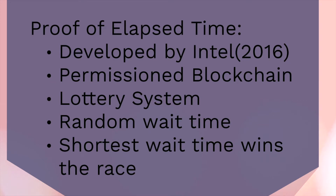It elects the leader by giving a random waiting time. Every node generates a random wait time. To generate this random wait time, a specialized system is developed by Intel which runs a secure code. Every node runs that secure code to generate a random wait time, and for that wait time the node goes to sleep. As soon as the wait time of a node is over, the first node who awakes from the wait time wins the race — so the winner is the one which has generated the shortest wait time.